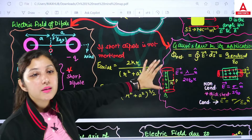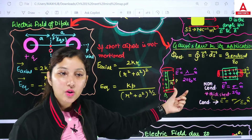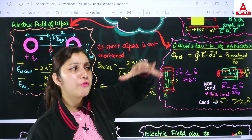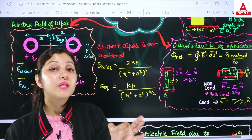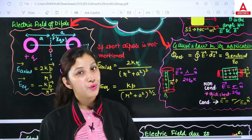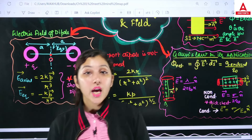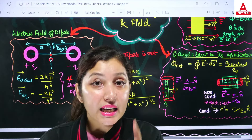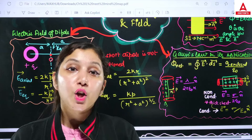Gauss's Law: electric flux = Q_enclosed/ε₀, where Q_enclosed is the charge enclosed by the Gaussian surface. For a linear charge distribution (infinite line charge), E = λ/(2πε₀r). For an infinite plane sheet: in non-conducting case E = σ/(2ε₀); in conducting case E = σ/ε₀. Note: electric flux being zero does not mean charge doesn't exist — it means the net enclosed charge is zero.